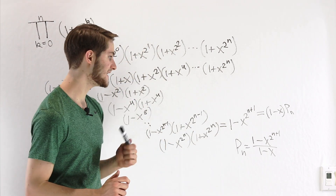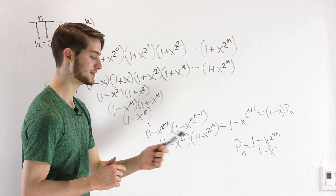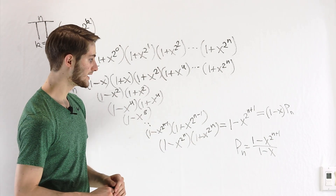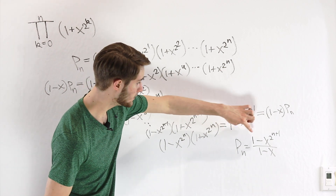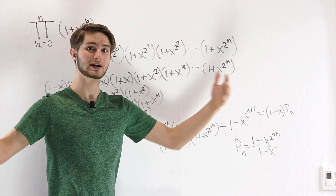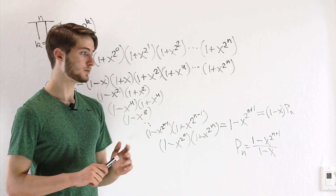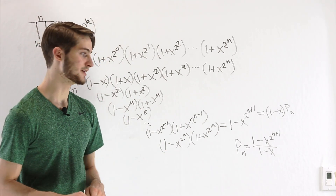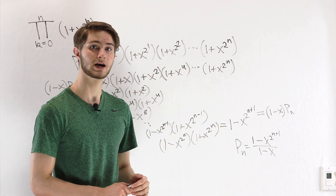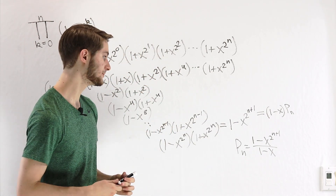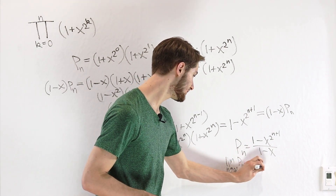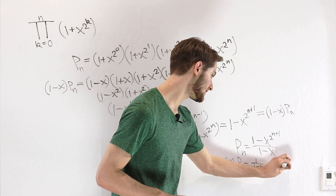The question is, what if we take the limit as n approaches infinity? Well, that depends on the value of x. If the absolute value of x is greater than 1 — say x equals 3 — then as n gets very large, we'll have 1 minus 3 to the power of 2 to something large, which is going to keep getting bigger and bigger. So if the absolute value of x is greater than 1, this limit will not exist. However, if the absolute value of x is less than 1 — say we had a third instead of 3 — then we'd have a third raised to that giant power, which just gets smaller and smaller going to 0. That means the limit as n approaches infinity of p sub n is going to be 1 over 1 minus x, as long as the absolute value of x is less than 1.